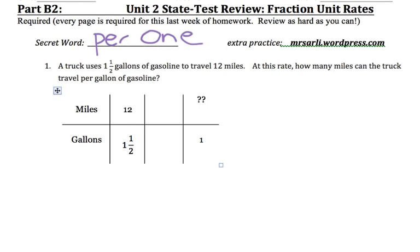And then we're trying to get to 1 gallon. And one strategy is just to divide 1.5 by itself, because anything divided by itself is equal to 1. So I'm going to divide it by 1.5. And up here, I'm going to do the same thing, divide it by 1.5. If this is a calculator section, great, but it might not be. So this is what we would have to do. We would have to do 12 divided by 1.5.